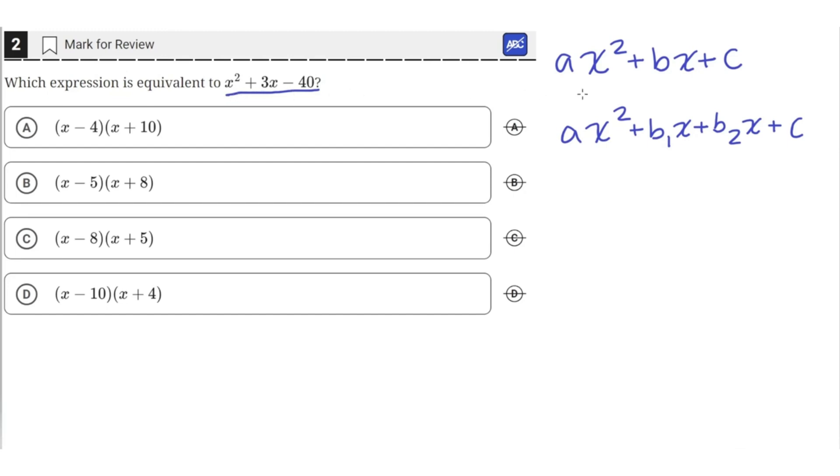This quadratic is in the form ax squared plus bx plus c. In order to factor this, we have to split the b term into two smaller b terms.